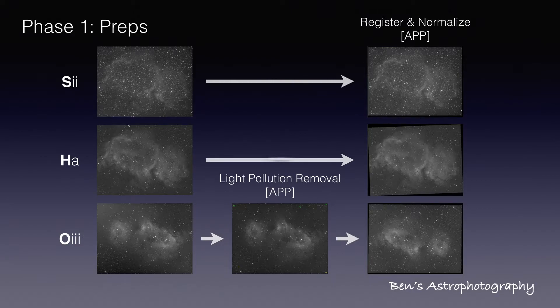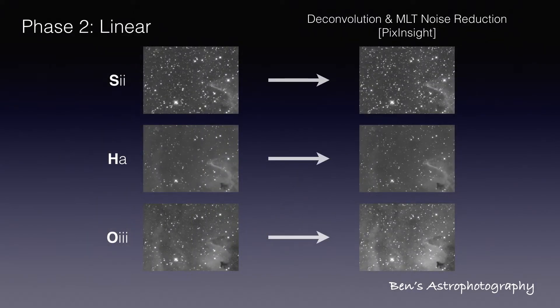Then phase two — I move on to PixInsight. I do a deconvolution to sharpen both stars and nebulosity, and MLT to denoise the background. These two are the most important things you should do in the linear stage. Linear stage means you haven't stretched the image, and the signal count on each pixel is linear to the number of photons that your camera received during integration.